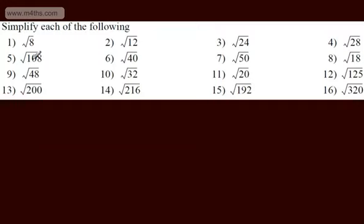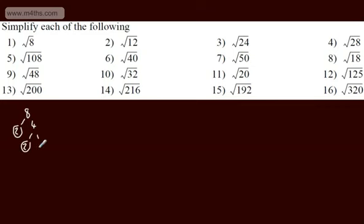To begin with, we're going to start looking at simplifying surds. I think it's important to stress that there are a whole host of ways of doing this. The main way I like to do it is to prime factorise the number. So let's look at 8. If we prime factorise 8, we have 2, then 4, then 2 and 2. So as a product of prime factors, we could write 8 as 2 multiplied by 2 multiplied by 2.